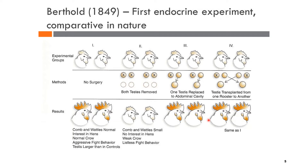In terms of behavior, they still retained interest in hens, normal crowing, and aggressiveness. This experiment concluded that the testicles release a hormone, testosterone, that influences aggression and dominant male behaviors.